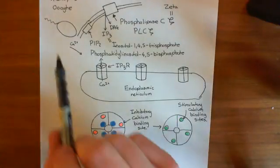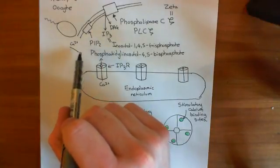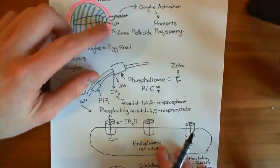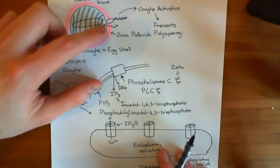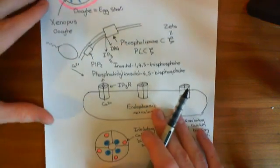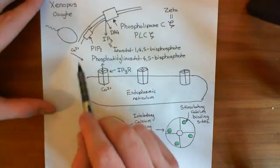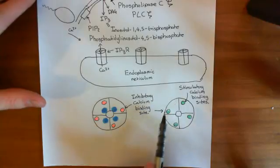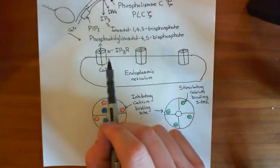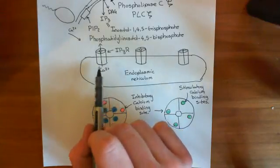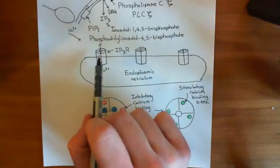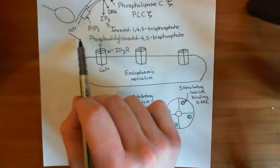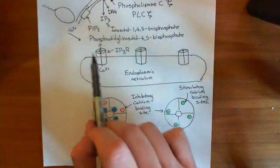What also happens is that the sperm's contact causes an initial influx of calcium nearby where the sperm touches. So the sperm touches here, and that causes a tiny amount of calcium to come into the cell from the extracellular fluid at that pole of the oocyte. That calcium binds to the stimulatory calcium binding sites that have been exposed on the IP3 receptor, causing this IP3 receptor to adopt the open conformation. Calcium then comes out of this IP3 receptor, and at this moment the IP3 receptors activated are only those nearby where the sperm touched.